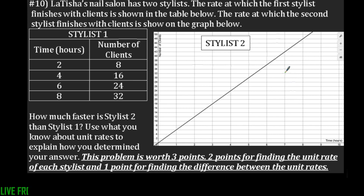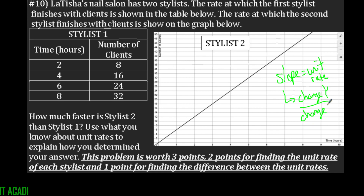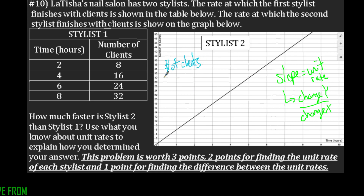Always use the space provided. Also make sure you know slope is the same thing as unit rate, because we normally say it's the change in y over change in x. For both of these situations it's going to be the number of clients, and time or hours is going to be on our x. So find our change in y, find our change in x, write it as a fraction, and then be able to compare those two.